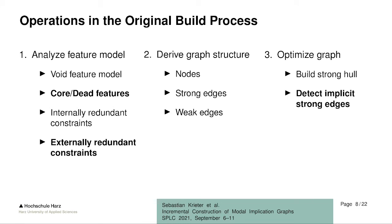As it turns out, only some of these operations are really expensive — mainly those using the SAT solver: detecting dead features, finding externally redundant constraints, and detecting implicit strong edges. The idea for the incremental build process is to focus on these three operations and modify them so that we reuse information and speed up the process.